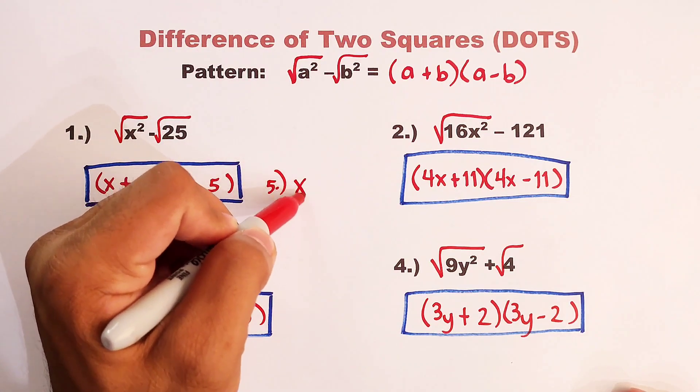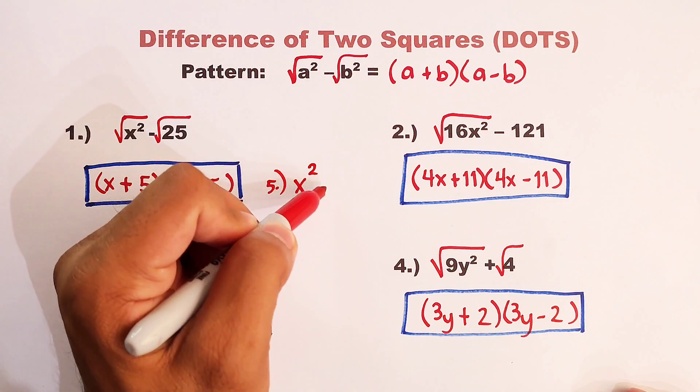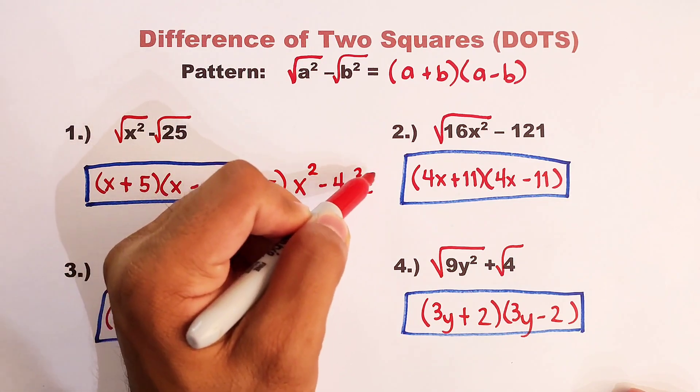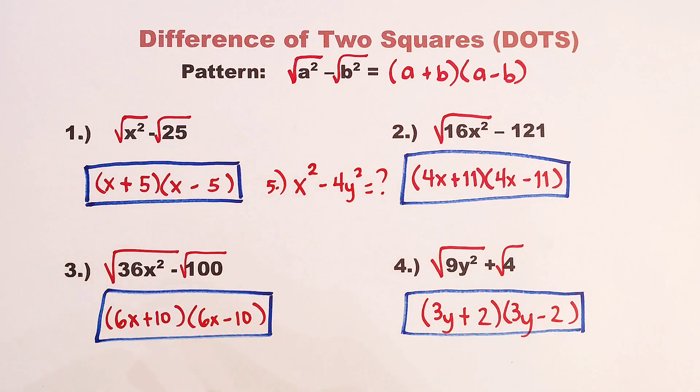Let's say you need to factor out x squared minus 4y squared. Tell me in our comment section, what is your answer to this problem?